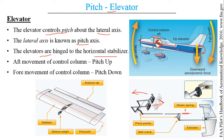In some cases the whole horizontal stabilizer is used as a control surface — this is known as a stabilator, where the entire stabilizer portion acts as a control surface. A trim tab is also associated with it.